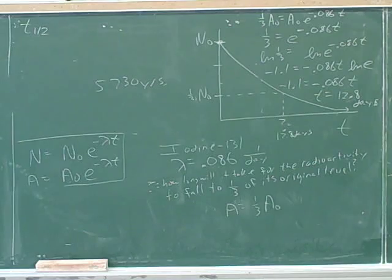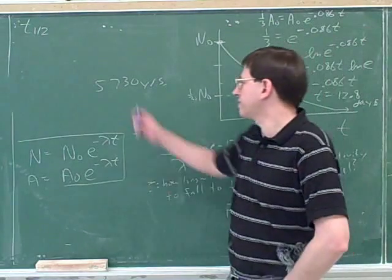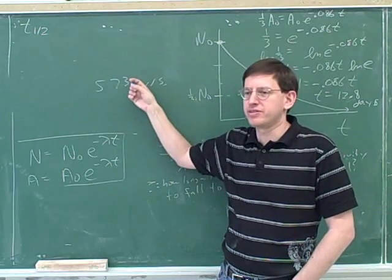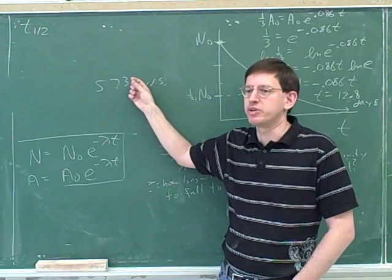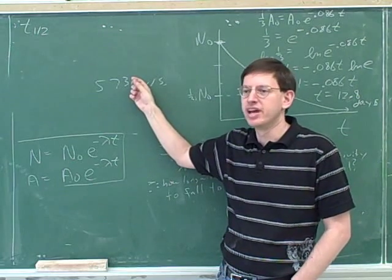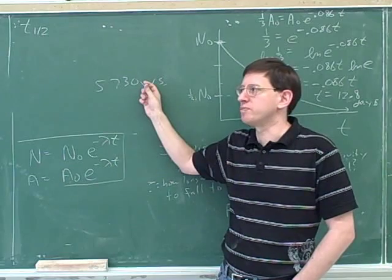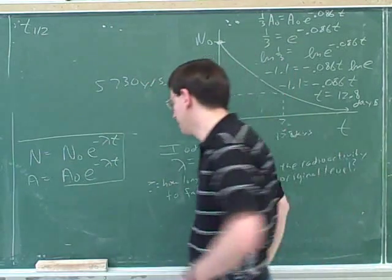So after the first 5,730 years, half of the original nuclei will be gone. And then if you wait another 5,730 years, another half will be gone, which means that you're down to a quarter of what you started. And then if you wait another 5,730 years, another half will be gone, which means that you're down to 12.5% of what you started.